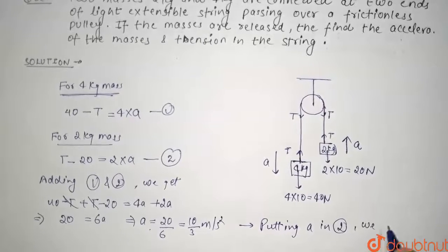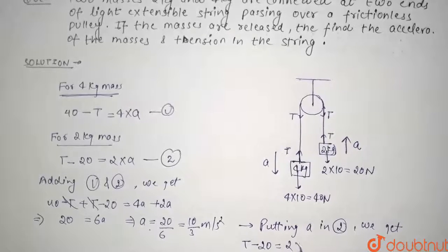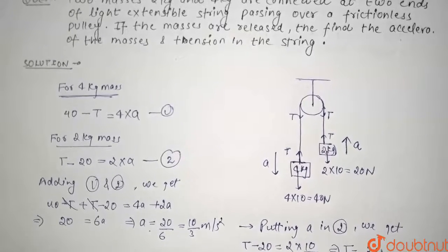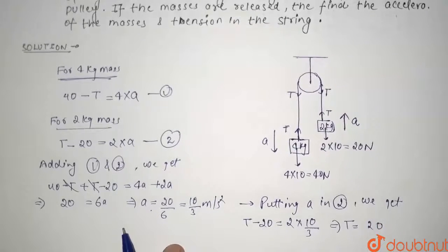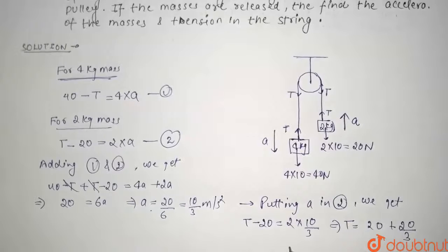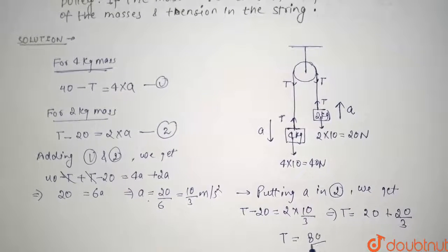So we will write, putting acceleration in second equation, we get tension minus 20 is equal to 2 into acceleration which is 10 by 3. So from here tension comes out to be 20 plus 20 by 3 which comes out to be, so our tension comes out to be 80 by 3 newton.